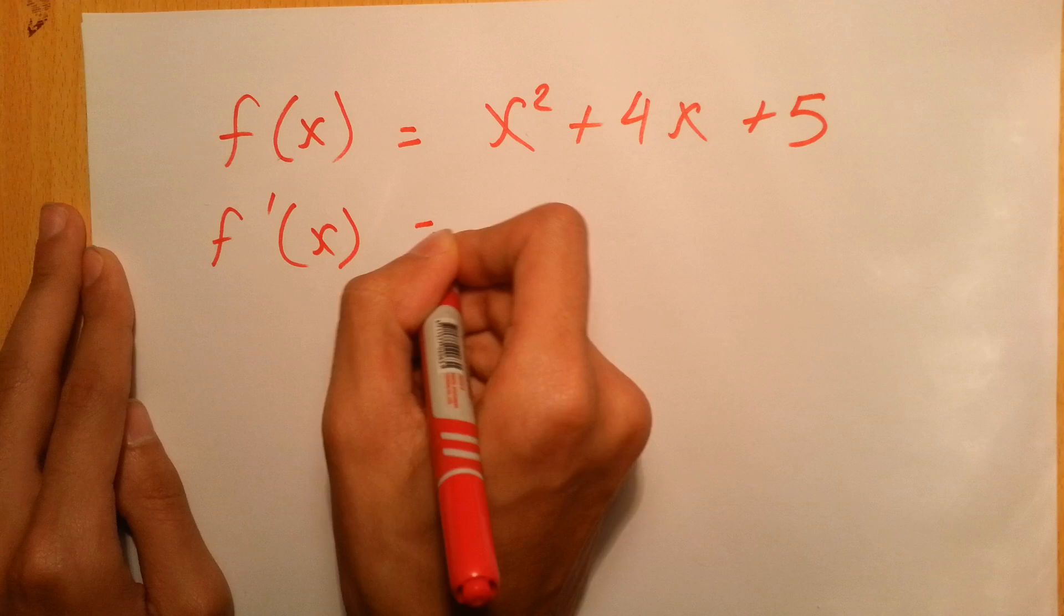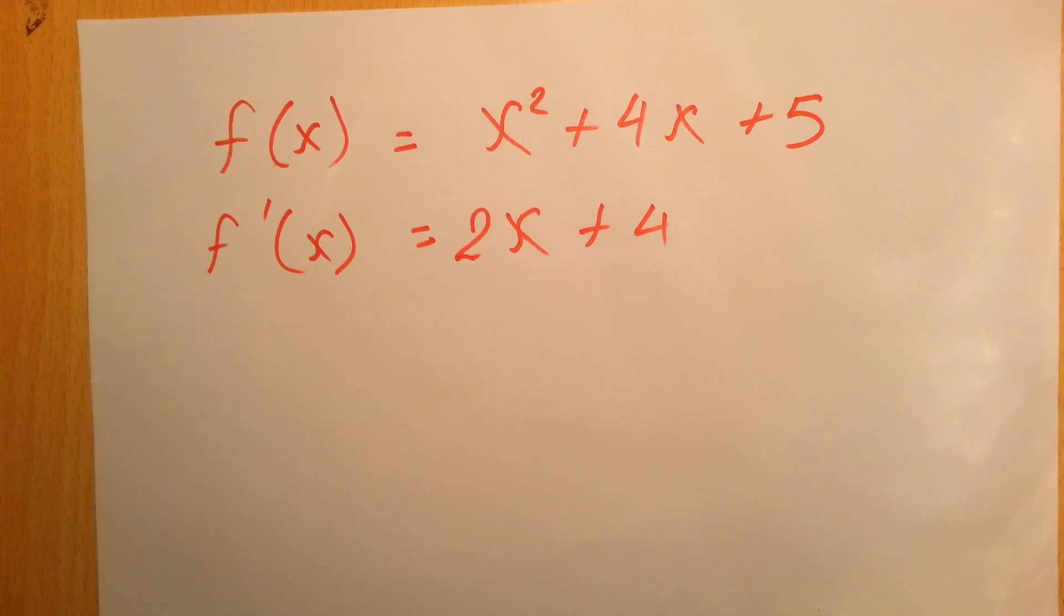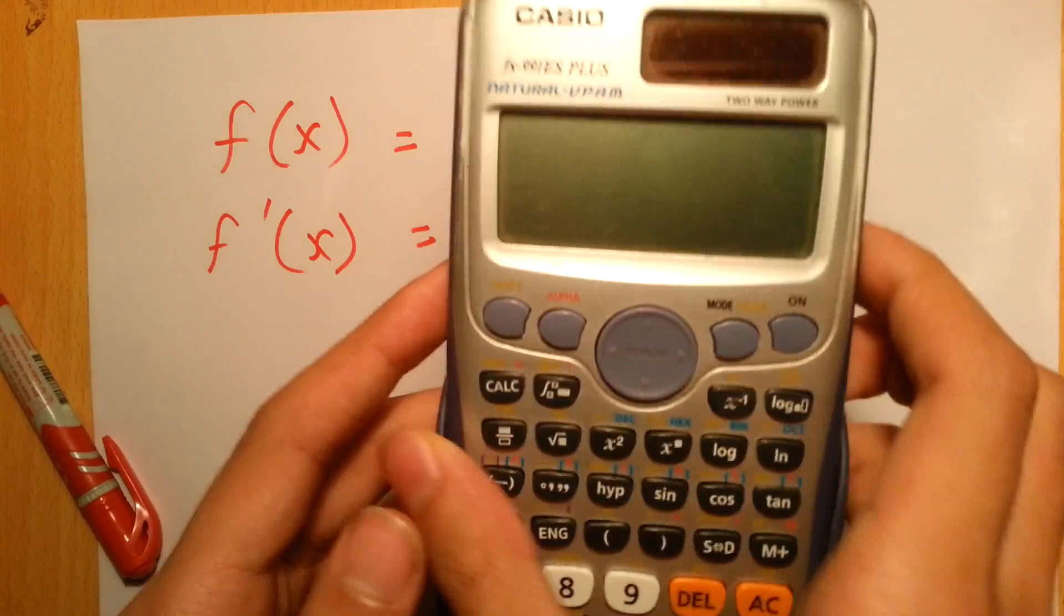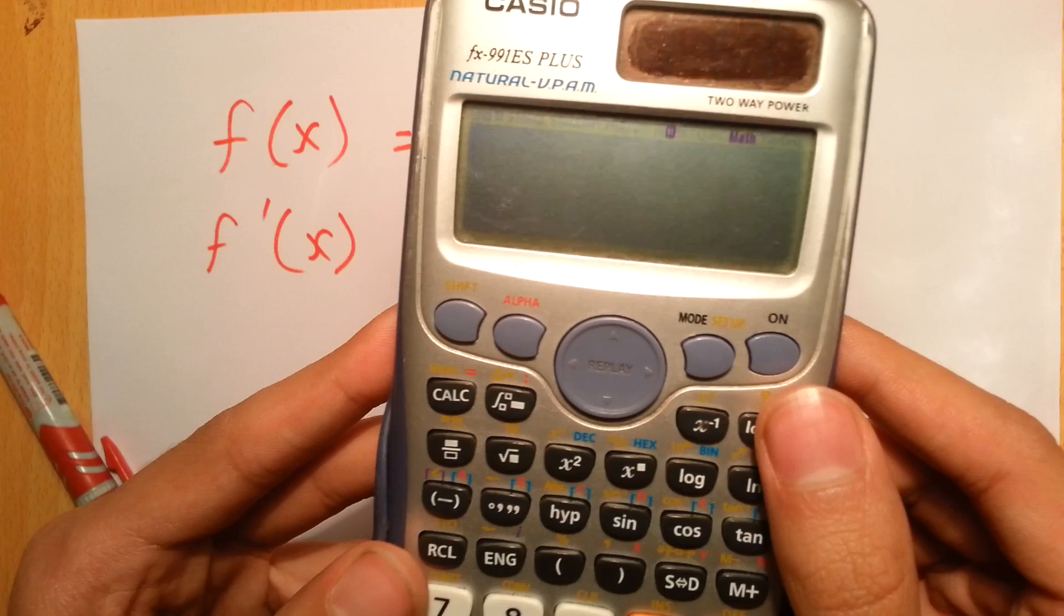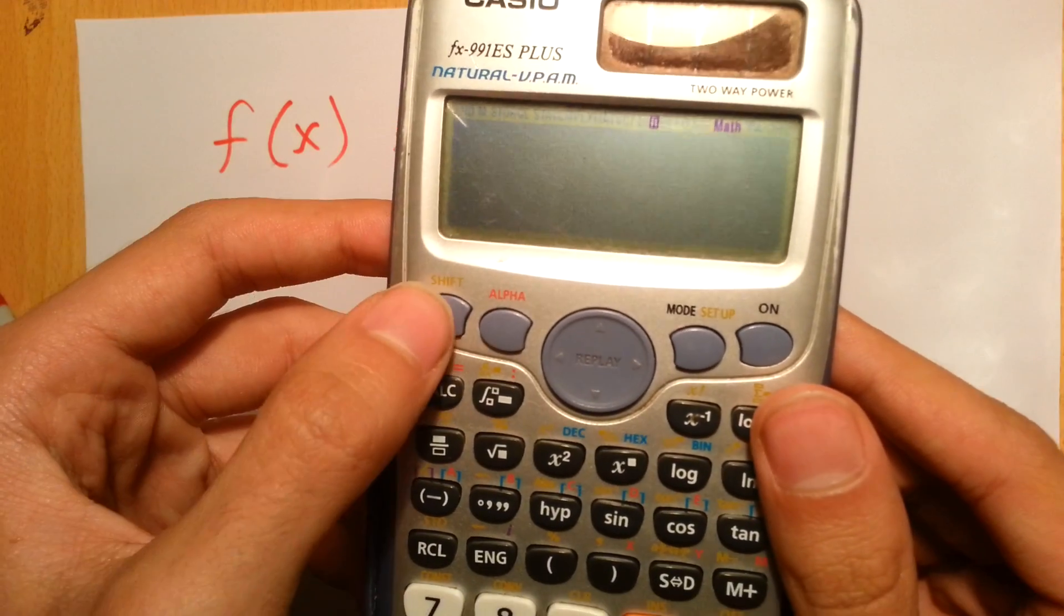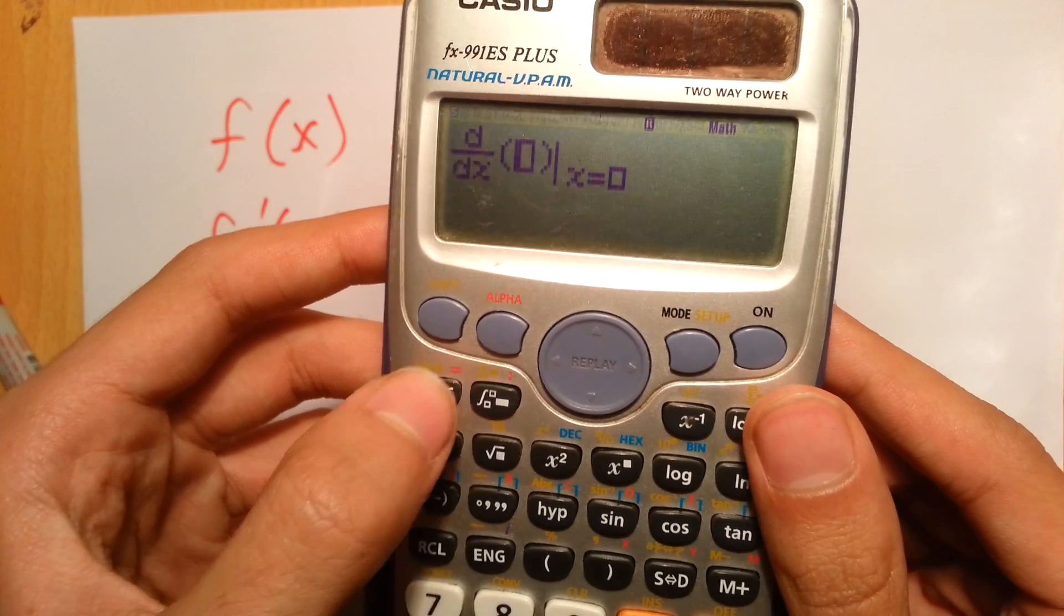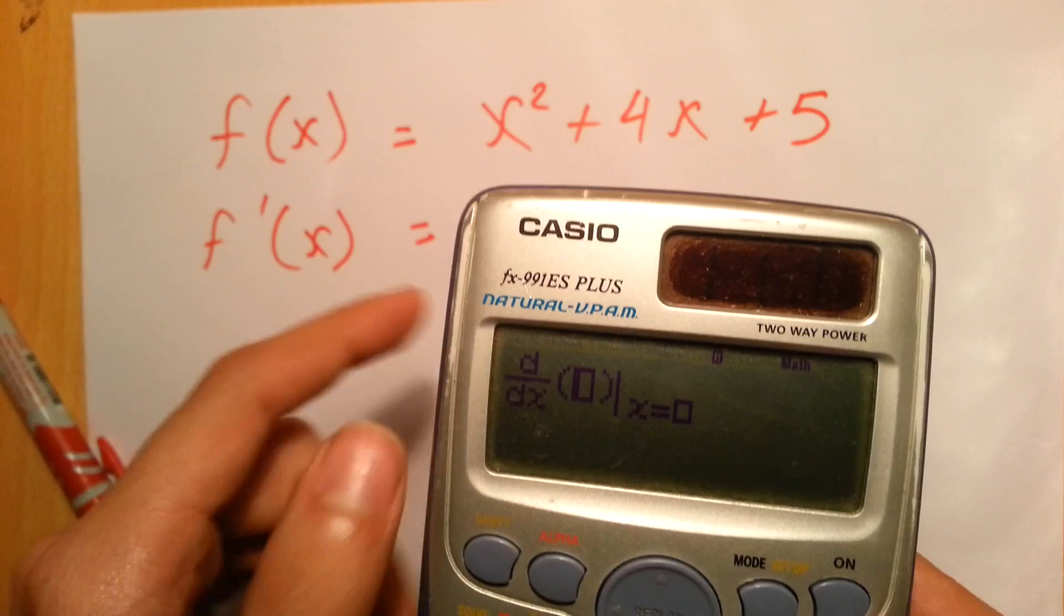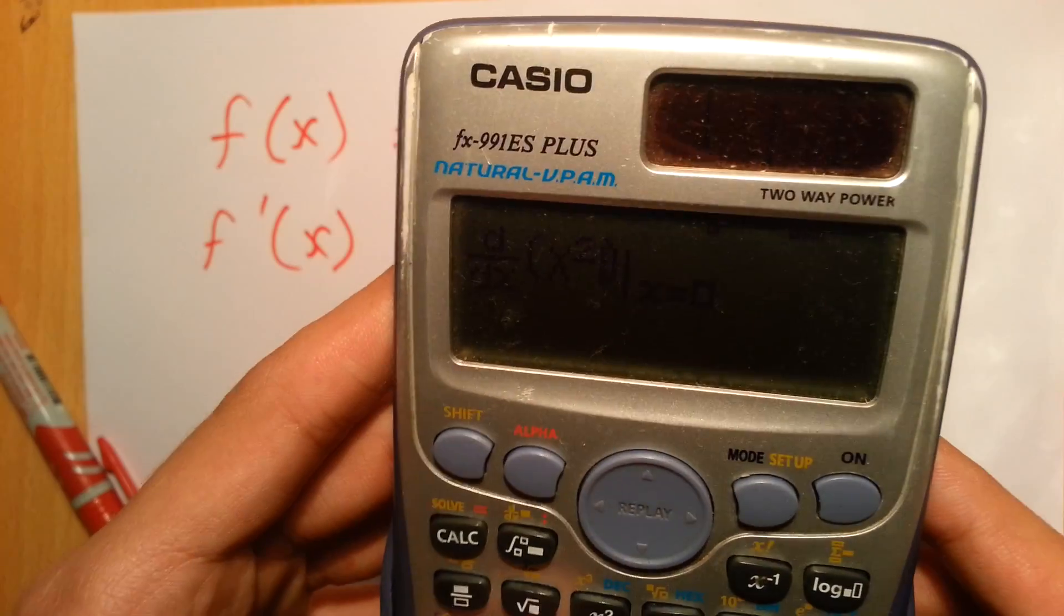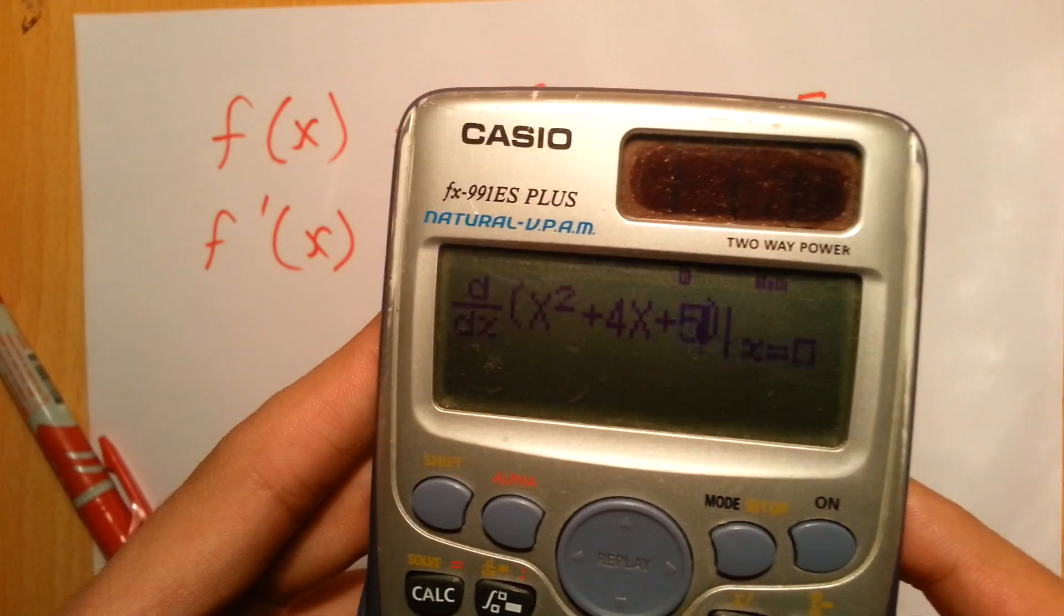So how to check from this calculator? The first thing you have to do is press the shift button and then this one, which will give you the derivative. Then you enter your function, which is x squared plus 4x plus 5.